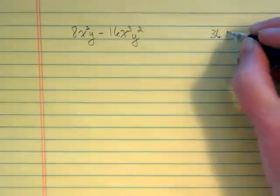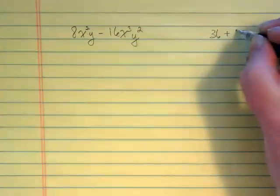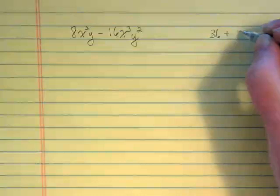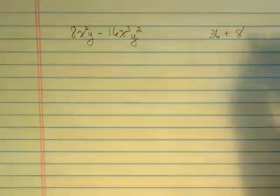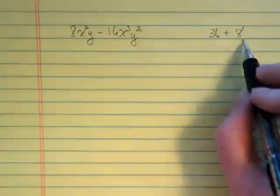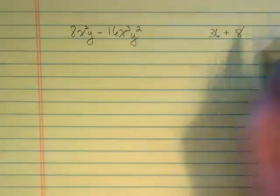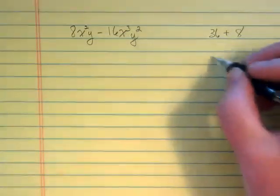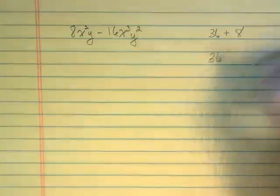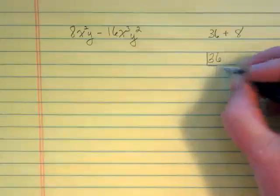But what if it was 36 plus, let's say, 8. And if I wanted to take something out of both of these, I could divide it out as a common factor. So when I think about 36, if I break that down into prime factors,